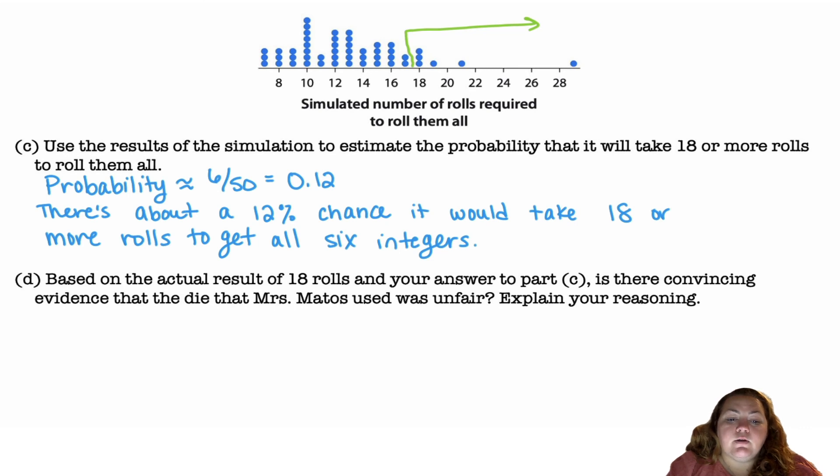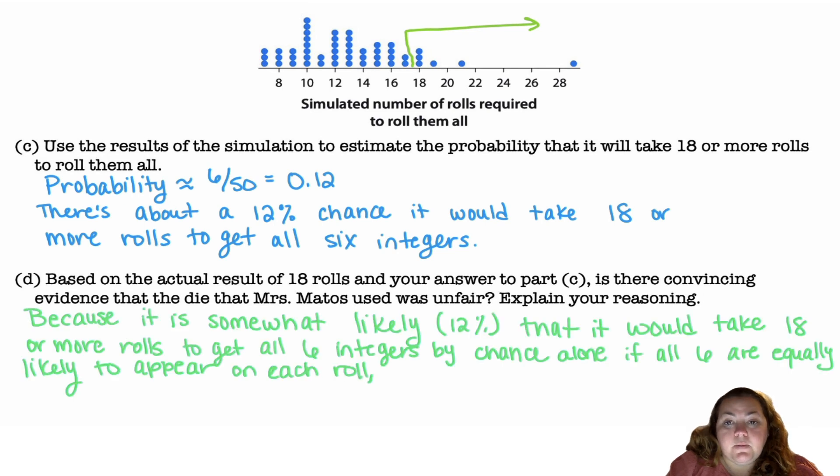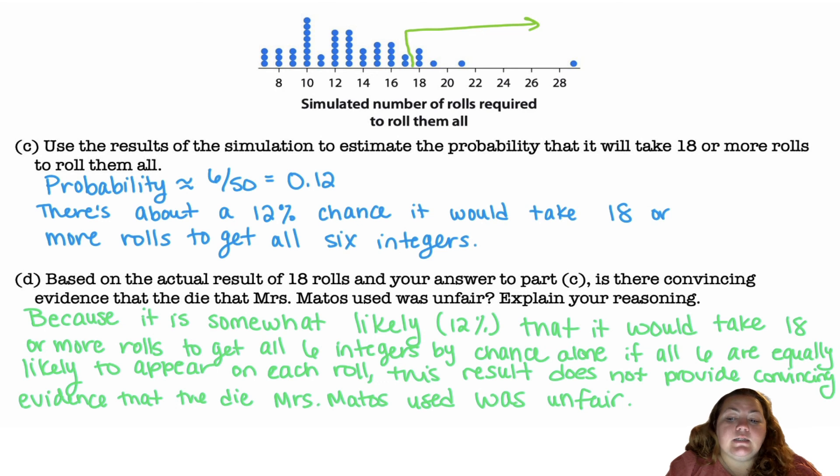Based on the actual result of 18 rolls and your answer to Part C, is there convincing evidence that the die that Miss Matos used was unfair? 12% is actually quite a bit statistically speaking. If something occurs less than 5% of the time, then we'd say it's statistically significant. But because it is somewhat likely at 12% that it would take 18 or more rolls to get all six integers by chance if all six outcomes are equally likely to appear on each roll, this result does not provide convincing evidence that the die Miss Matos used was unfair.